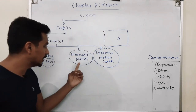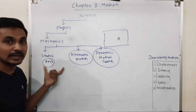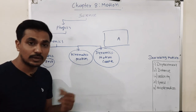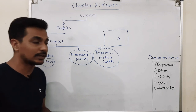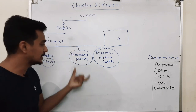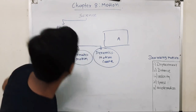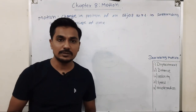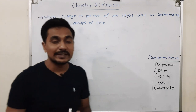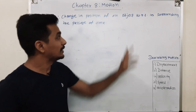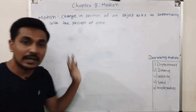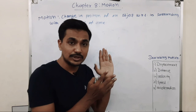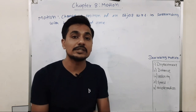If objects are in motion — if I throw this marker — we study at what velocity it moves, what acceleration it has, and what distance it covers in how much time. That is studied in kinematics. Chapter 8 belongs to kinematics and statics — about 90% of the chapter belongs to kinematics. So, what is motion?